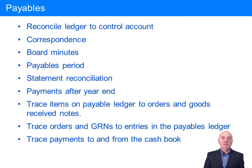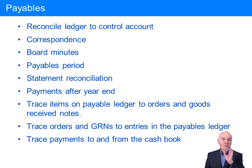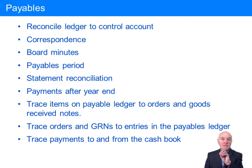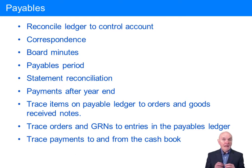First things first: we would reconcile the detailed balances in the ledger — the sum of those — to the control account. The total payables figure doesn't actually exist on its own; it's made up of perhaps several hundred individual payables balances. We have to make sure that the figure in the financial statements, which is a total figure, is actually made up of a number of discrete payables balances, and it's those which we're primarily going to be auditing.